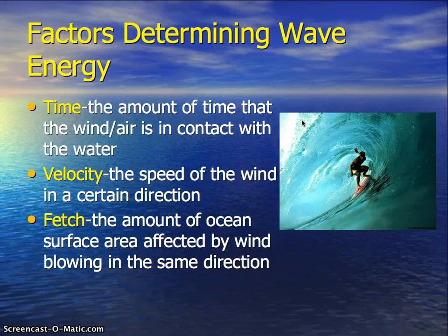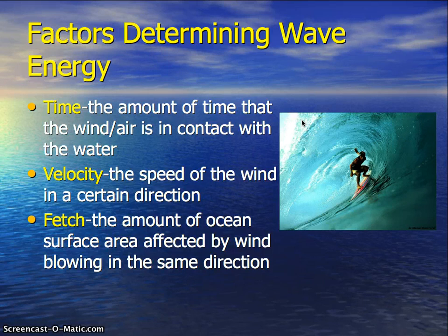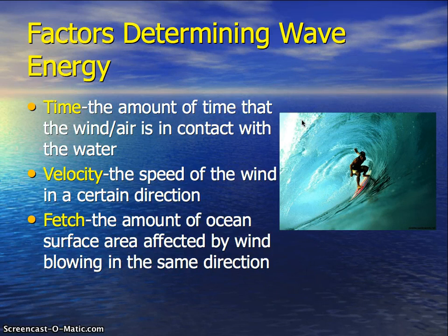There are three factors that determine the energy of a wave. The first is time — how long the wind has been in contact with the water. The second is velocity — the speed of the wind in a certain direction, whether it's a gentle breeze or hurricane-force winds. The third is fetch — the amount of ocean surface the wind blows across. For instance, the Pacific Ocean is much larger than the Atlantic, so the fetch of the Pacific is much bigger.